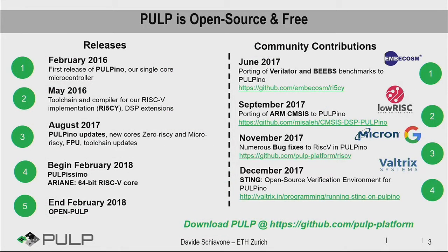PULP is now a five-year-old project. At the beginning of 2016, we became open source, free, with a permissive license. We started with PULP as a simple single-core architecture with a couple of IPs, like our RISC-V core. We've done a couple of updates, and this year we started putting open source our latest PULPissimo platform, which is still single-core but much more advanced. Today I will talk about PULPissimo.